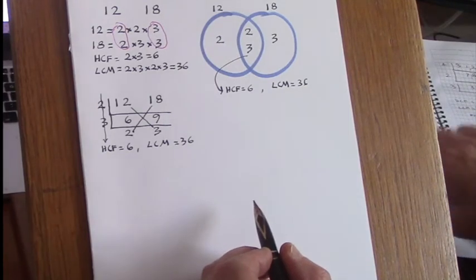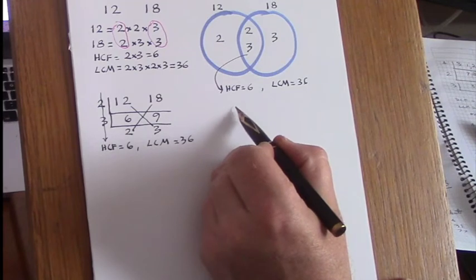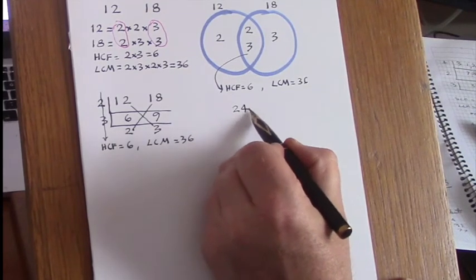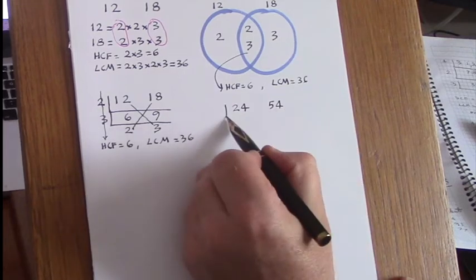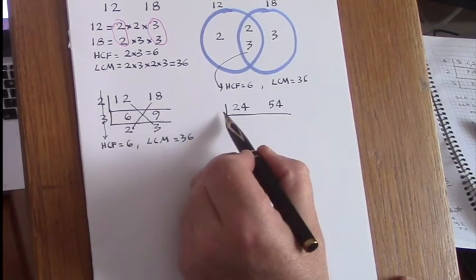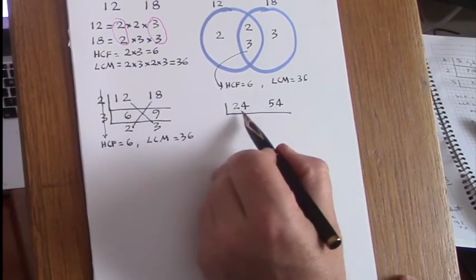Now we'll have a look at another example. We'll take 24 and 54. Now for the division process, we don't have to use prime factors.